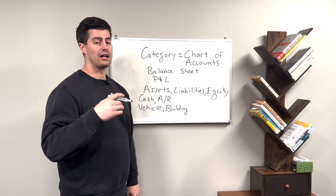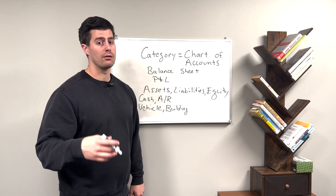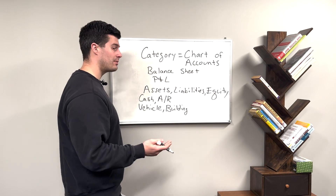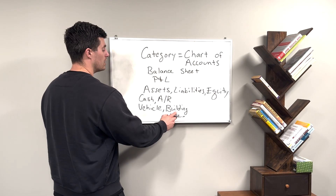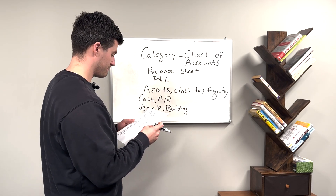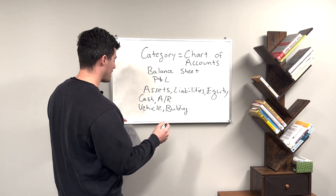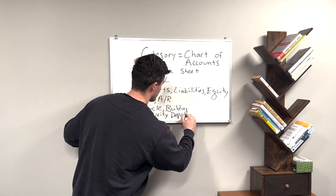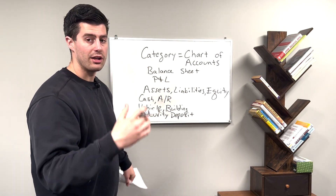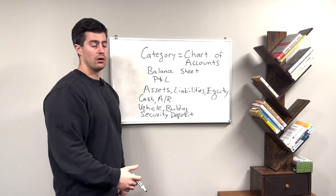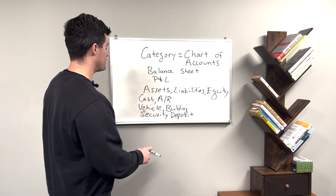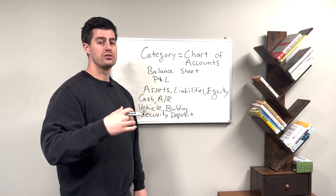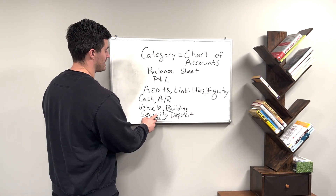Anytime you see a client spending a large sum of money, they are probably purchasing an asset. Anything more than two or three thousand dollars is probably a piece of equipment, an expensive piece of software, a vehicle, or a building. Another way you can categorize an asset is a security deposit. A lot of my real estate investors have security deposits — they'll write a thousand dollar check to some law firm or broker as a security deposit because they are purchasing a house. That's not an expense; that's an asset going towards the purchase of a house.